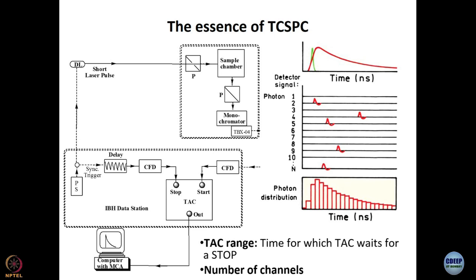If your lifetime is, say, 5 nanoseconds, remember the decay law: I(t) = I₀ · e^(−t/τ). When t = τ, the intensity becomes I(0)/e. Since e is approximately 2.7, roughly 3, we can say that in one lifetime the signal decays to about one-third of its value at time zero.